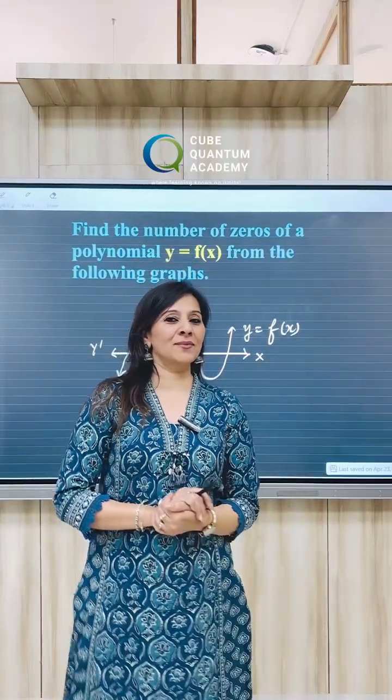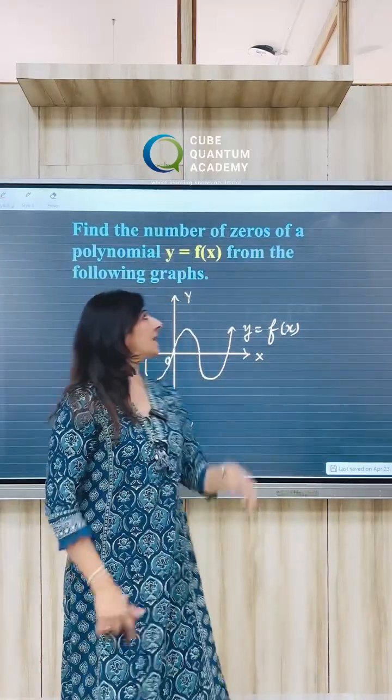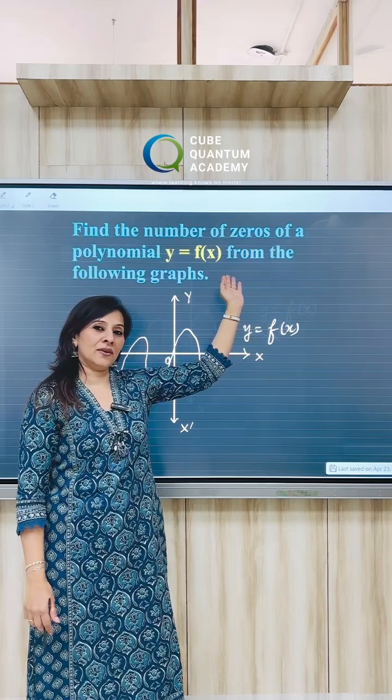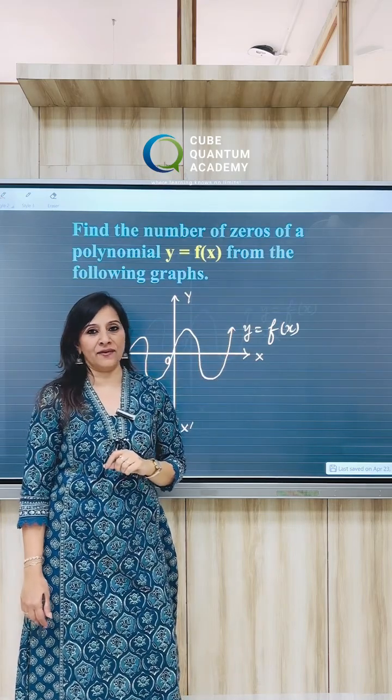Hello everyone, let's find out the number of zeros of the polynomial from its graph. If the polynomial is y equals f of x, it means the polynomial is in terms of x.